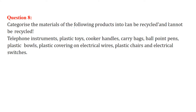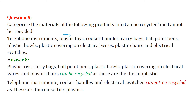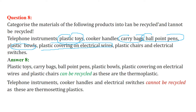Categorize the following materials into can be recycled and cannot be recycled. Recyclable items: plastic toys, carry bags, plastic balls, ballpoint pens, plastic coverings on electrical wires, and plastic chairs. Items that cannot be recycled: the telephone instrument, cooker handles, and electrical switches.